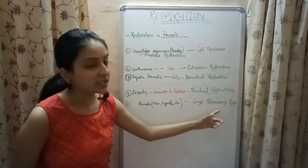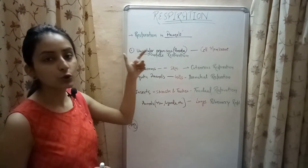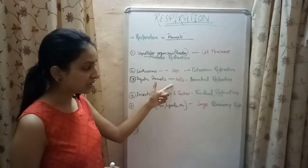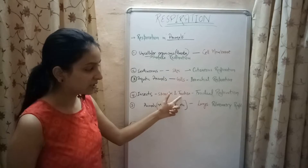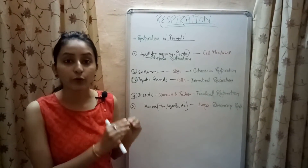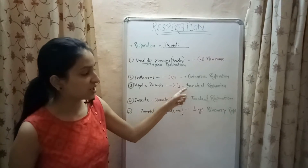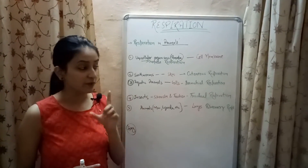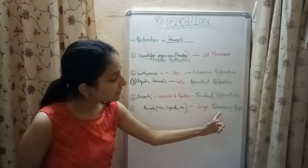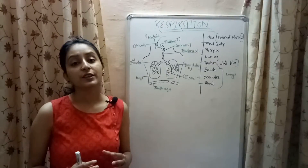In higher animals like humans, lizards, and birds, lungs help in respiration — this mode is known as pulmonary respiration. So the five types are: surface respiration through the cell membrane, cutaneous respiration through the skin, branchial respiration through gills, tracheal respiration through spiracles and trachea, and pulmonary respiration through lungs. In frogs, the larval stage — tadpoles — perform branchial respiration through gills, whereas adult frogs perform pulmonary respiration through well-developed lungs.